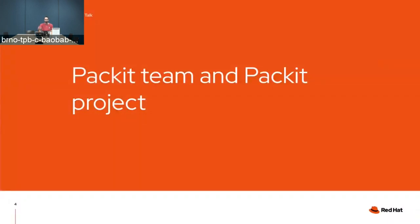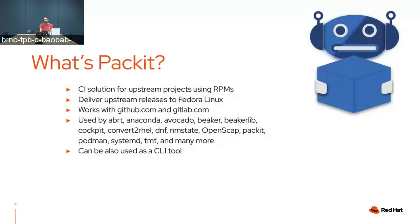So what's Packit? Packit is a CI solution for upstream projects that use RPMs or want to deliver their software into RPM-based distributions such as Fedora Linux, CentOS Stream, or Red Hat Enterprise Linux. We also offer automation for updating packages in Fedora Linux. Packit has native integration on GitHub with its own GitHub application, and we also support GitLab. We already have a bunch of upstream projects using it for integration or automation of upstream delivery.